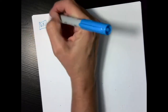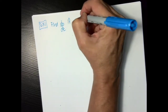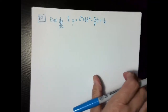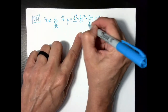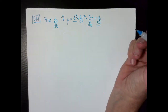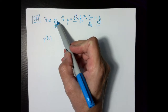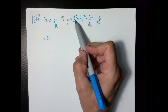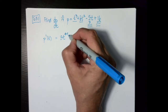Example number one: find dp over dt if p is equal to t cubed plus 6t squared minus five-thirds t plus 16. I'm going to manage each piece separately. So p prime of t — notice this says I'm taking the derivative of p with respect to t. Using the power rule on the first term: the 3 comes out front, giving me t to the 3 minus 1, which is t squared.